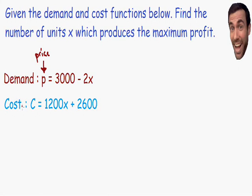Now let's take a look at the cost function. The cost is represented by c. C is equal to 1200x plus 2600. Notice how the higher the value for x, the higher the cost is going to be, which makes sense — the more units you produce, the higher the cost it's going to take to produce them. So these are the two equations which we will be using in this example.